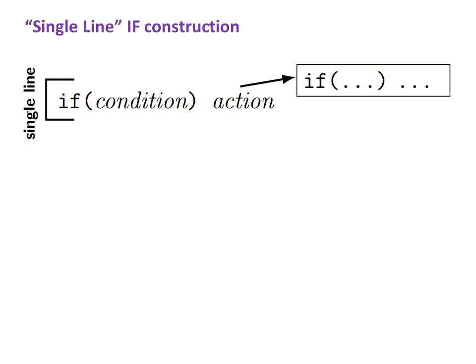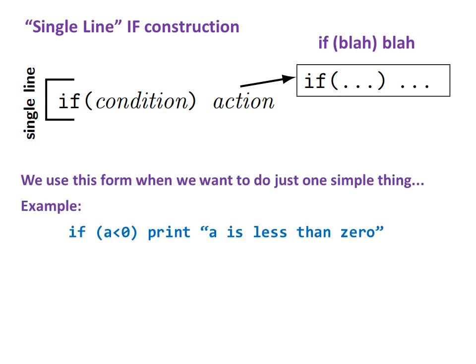The single line IF construction. Here are both the formal and informal definitions, where the informal definition can be read out loud as IF blah blah. We use this form when we want to do just one simple thing. For example, if a is less than zero, print a is less than zero.